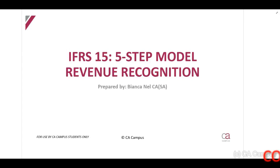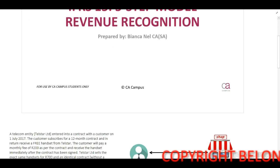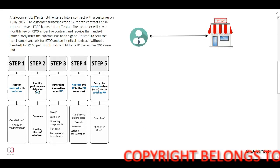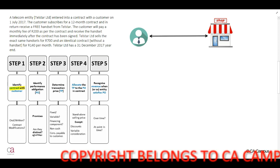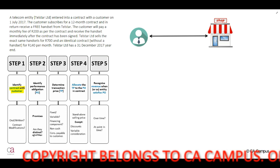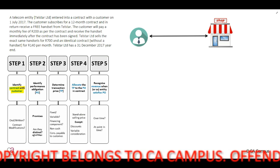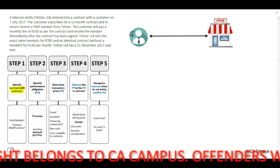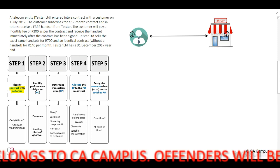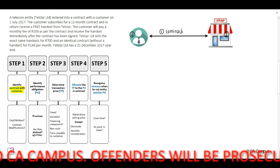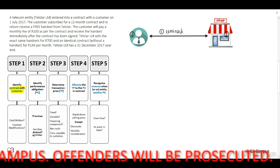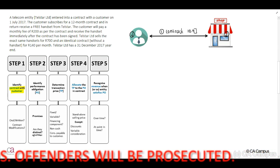In this recording, we will work through a basic example on how to apply our IFRS 15 five-step model for revenue recognition. Before we look at the example, let's revise our five steps. Step one, we need to identify the contract with a customer. There has to be a customer and an entity, and there has to be a contract between these two parties and agreement in terms of the criteria of IFRS 15, paragraph nine.